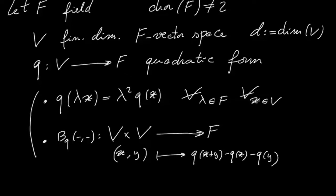And this map is actually F bilinear. So this is what it means to be a quadratic form.